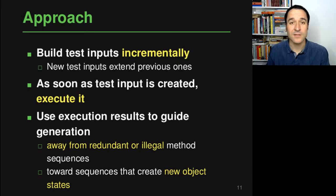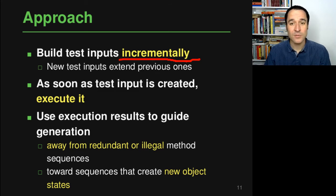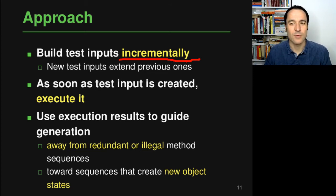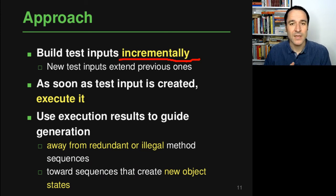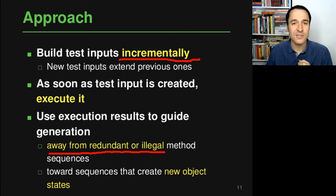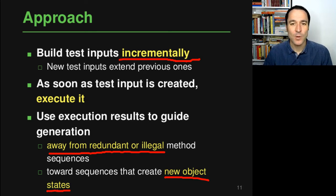The key idea of feedback-directed random test generation is that test inputs are created incrementally. A new test input is not created from scratch but extends a previous test input, building better and better tests because we already know the partial test inputs have desirable properties. As soon as a new test input is created, the program is executed with it to see if it has the wanted properties. The execution result is used to guide test generation away from redundant or illegal method call sequences, and instead toward sequences that create new object states—basically bringing the class under test into states where it hasn't been before.